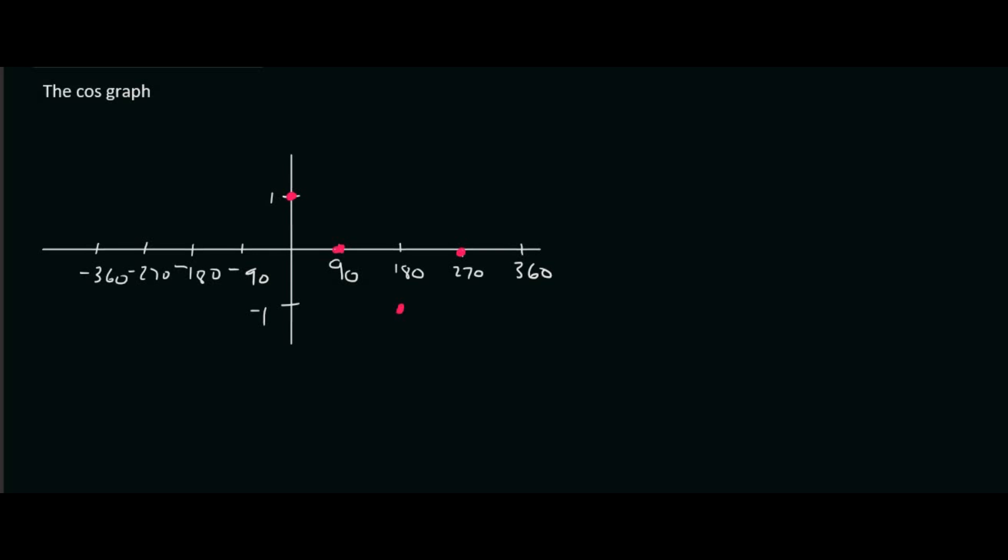Cos 270 would give you 0. And then cos 360 would give you 1. If you wanted to go to the left hand side,